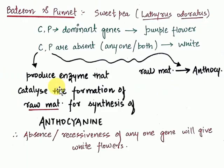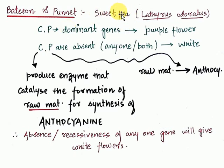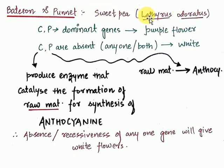Bateson and Punnett demonstrated this by experimenting on sweet pea, known as Lathyrus odoratus. There is a lot of difference between pea and sweet pea — the normal garden pea is Pisum sativum, but we are talking about sweet pea, Lathyrus odoratus. This forms a very important question, so you have to memorize that Bateson and Punnett experimented on sweet pea.